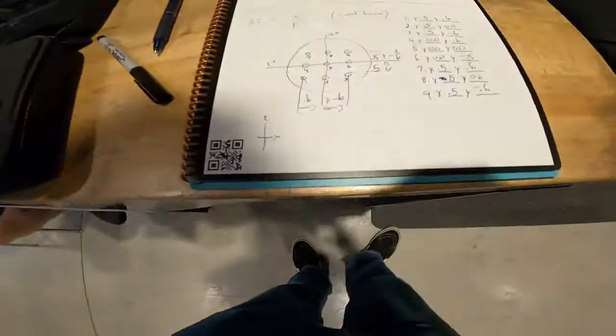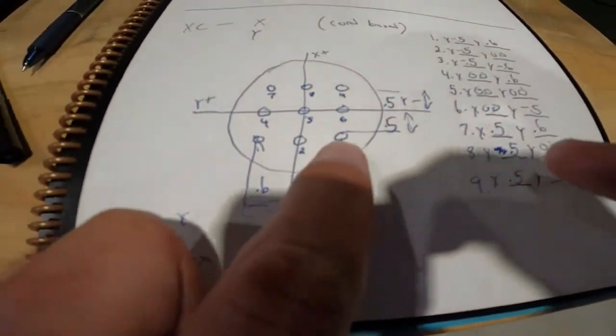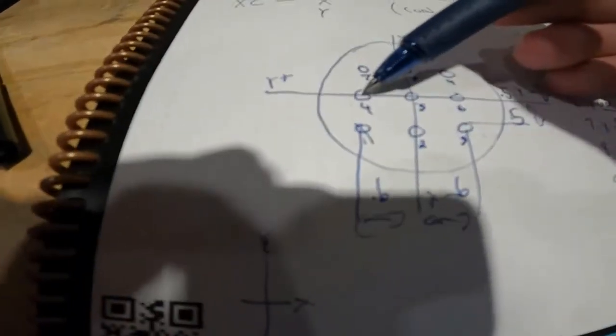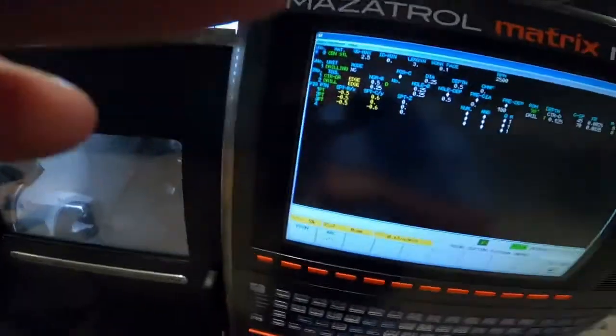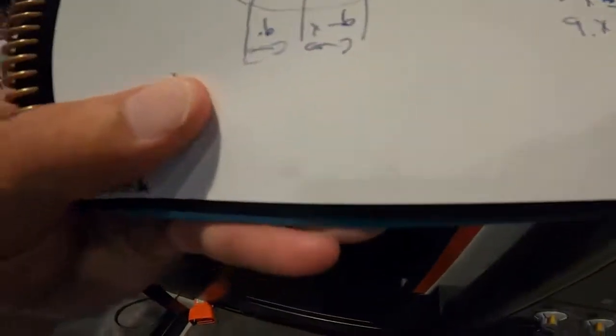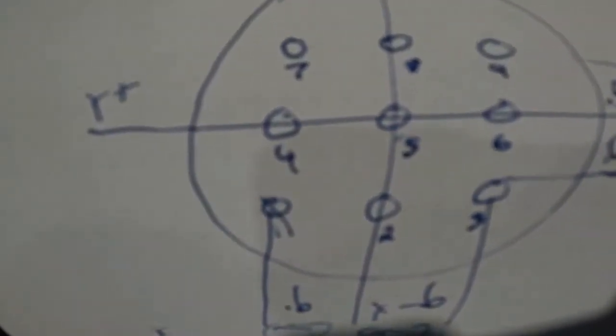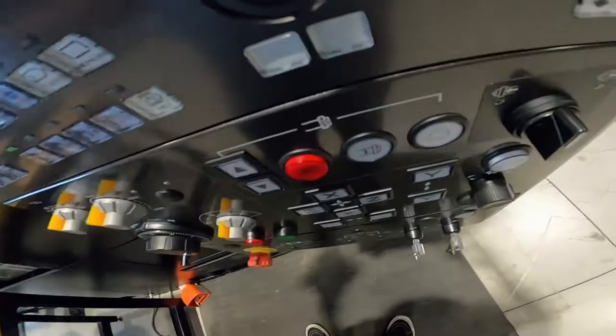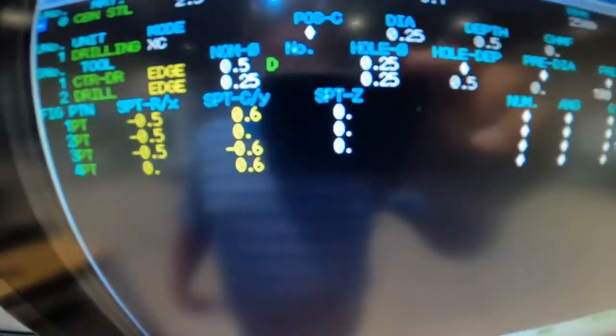That did the first hole, two, and three. Now let's do this second set of holes — four, five, and six. Notice that the X value is going to be zero. So we're going to go Point, X of zero, and our Y axis — if you look at the center of the screen that's Y of zero — so number four is going to be positive 0.6. Start point Z is going to be zero.